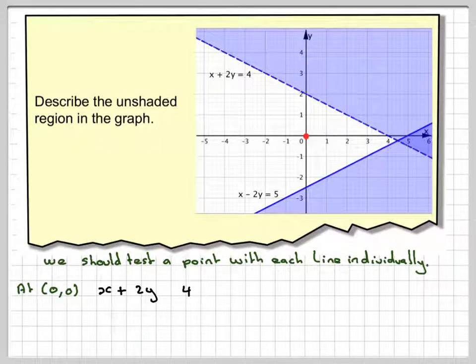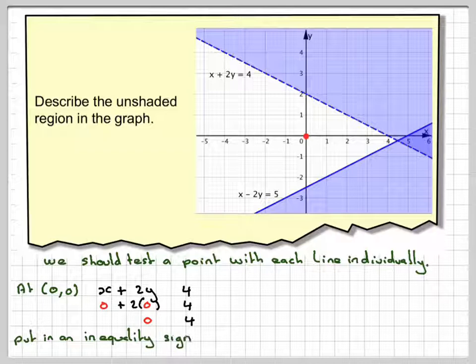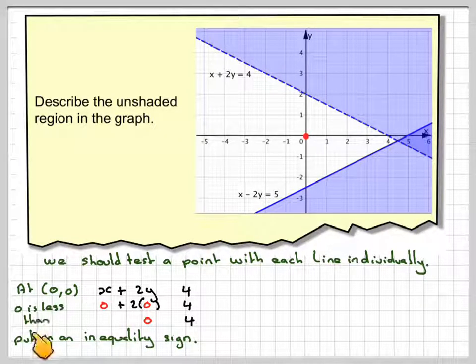So putting in 0 plus 2 times 0 and 4, that gives me 0 and 4. We need to put in the inequality sign so that it's correct. Putting in the inequality sign, we know that 0 is less than 4.